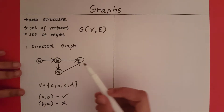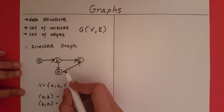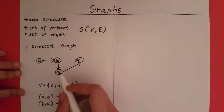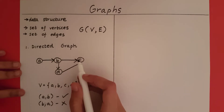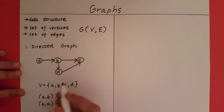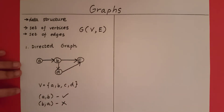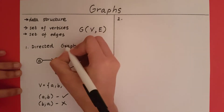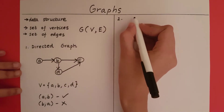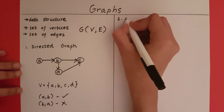So in a directed graph, all the edges have directions and the edges go from one vertex to another. This direction is important in this graph. The second kind of graph that we will look at is a non-directed graph.